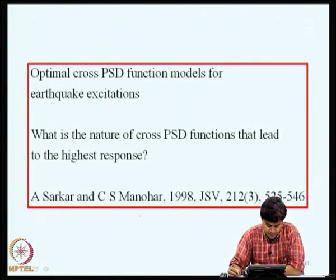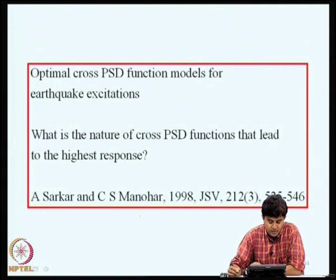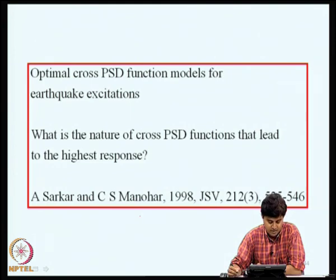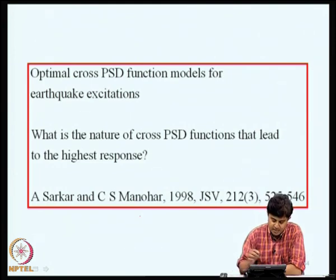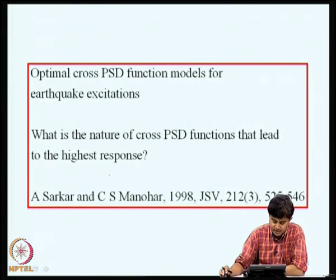Given the lack of adequate knowledge on cross PSD functions of earthquake ground accelerations, it makes sense to ask: what are the optimal values of these cross PSDs for which the response reaches its highest values? This question has been discussed in a paper by Sarkar and Manohort, and I will briefly outline the problem and the solution.